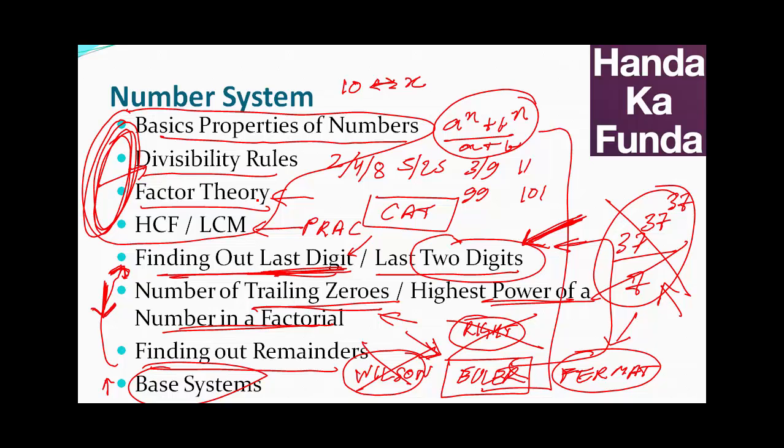The factor theory, the divisibility rules, the HCF, LCM. Base systems, a little bit. Finding out last digit, yes. You need to be good with that because it will help you eliminate options and sometimes solve questions. The other stuff, I am sorry to burst your bubble, not so much. You are wasting your time or you may be wasting your time. I hope you see this video before you have spent too much time on that.